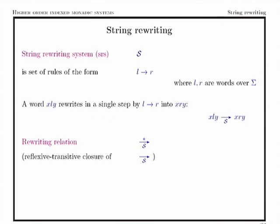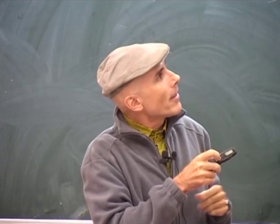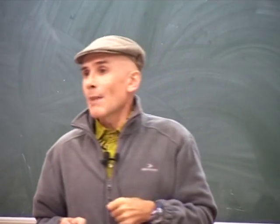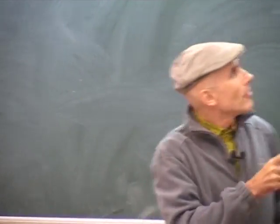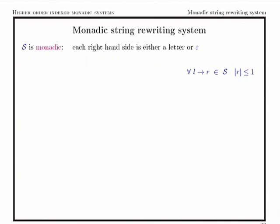A string rewriting system is a way of transforming words into words using rules: by identifying within a word the left-hand side of a rule and replacing it with the right-hand side. This gives the single-step rewriting relation, which may be iterated to obtain the transitive closure. An important property is confluence: if a word can be rewritten in different ways, there is always a possibility to join these two paths. Another important property is termination — no infinite chain of rewritings. A system with both properties is called canonical.